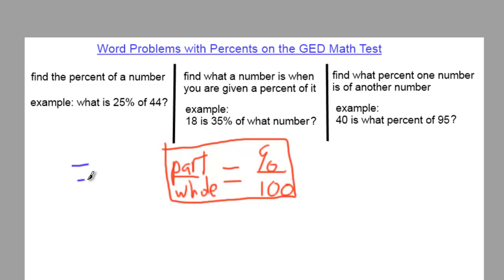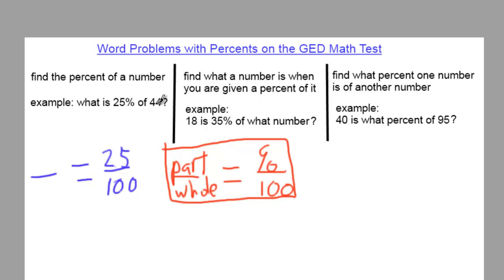Set up your equation with 100 in the denominator, and look at what information they're giving you. For 'What is 25% of 44?' — they are giving you the percent, so put 25 in the numerator. They're also giving you 44, which is the whole, so put 44 in the denominator. You don't know the part — that's what you're trying to find — so put x in the numerator on the other side.